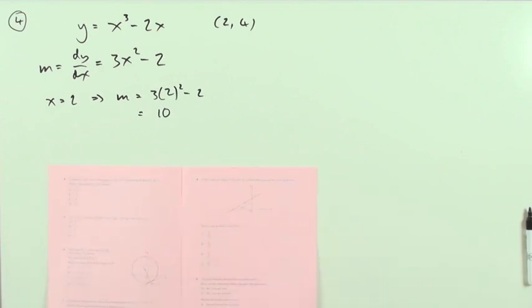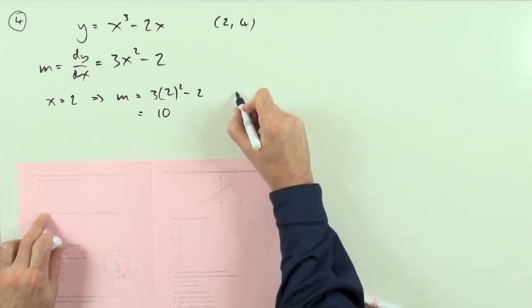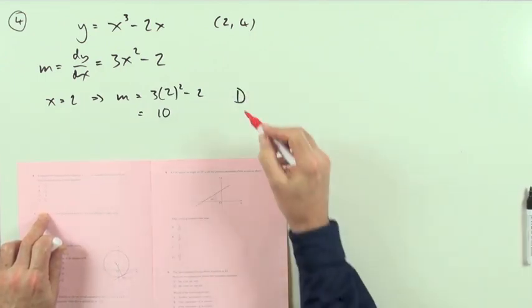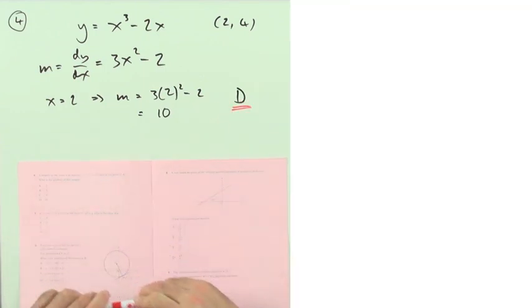And then we'll just check to see which one that is. And that was d. So number four is the answer d.